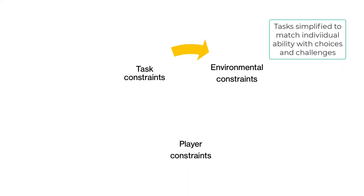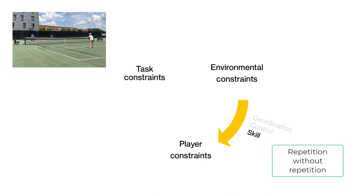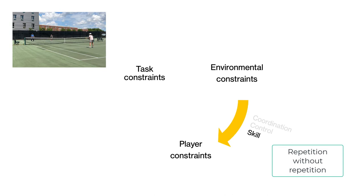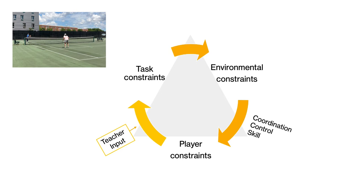With tasks simplified to match the individual technical ability of the players, progress is made. As players repeat these skill cues, they engage in the process of repetition without repetition, building a gradual process in their search for optimal solutions to the task problem. In this process, players become attuned to the affordances in the practice environment as it connects to their previously played game environment, and the skill starts to emerge.